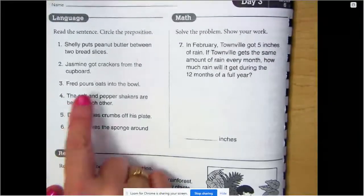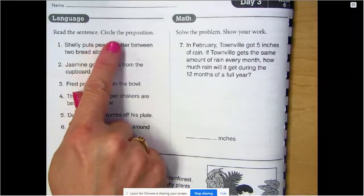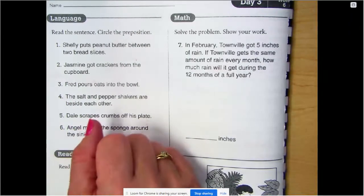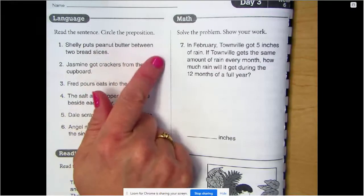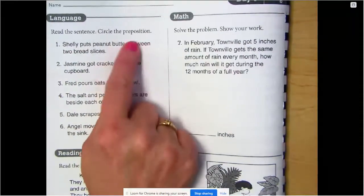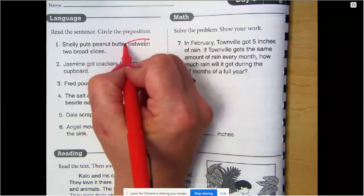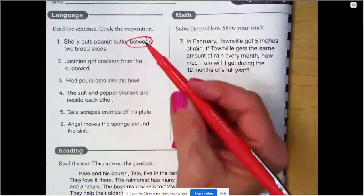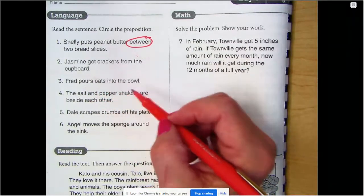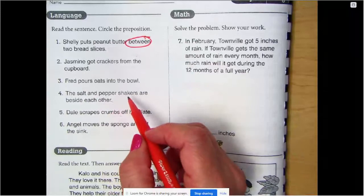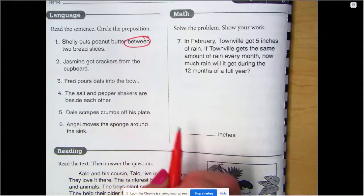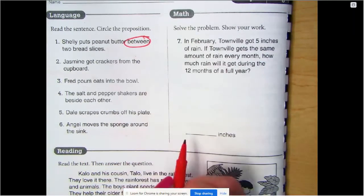On page 38 under language, it says read the sentence, circle the preposition. A preposition is going to connect parts of the story. So Shelly puts peanut butter between two bread slices. Where does she put it? Between. So there's your preposition there. Give the others a try. I'm going to read them for you. Jasmine got crackers from the cupboard. Fred pours oats into the bowl. The salt and pepper shakers are beside each other. Dale scrapes crumbs off his plate. Angel moves the sponge around the sink.